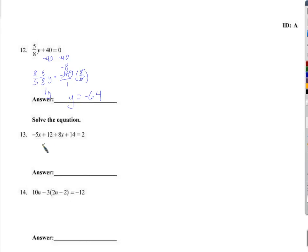Okay. Let's start by collecting like terms on the left side. I think that's the easiest thing. So negative 5x plus 8x is 3x. 12 plus 14 is 26. Let's subtract 26 from both sides. We have 3x equals negative 24. We divide by 3 and x is negative 8.